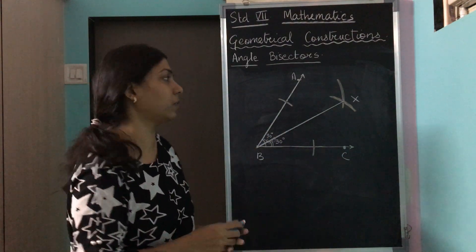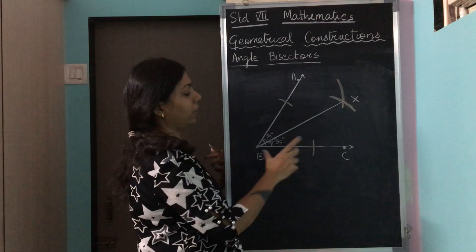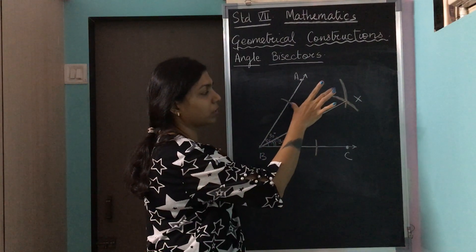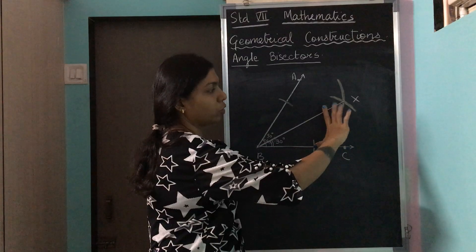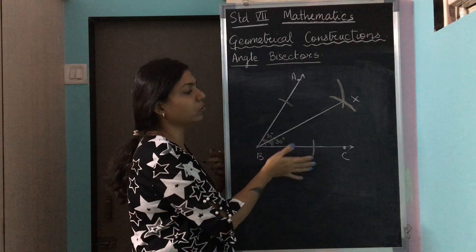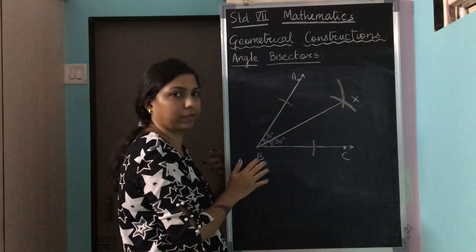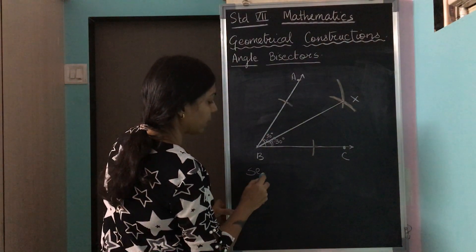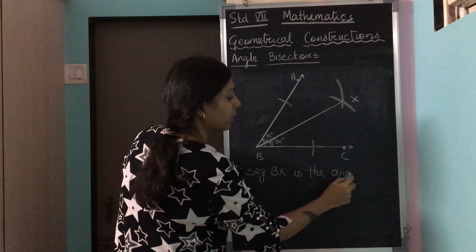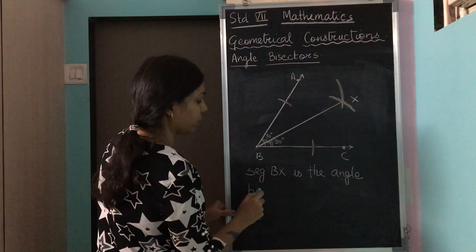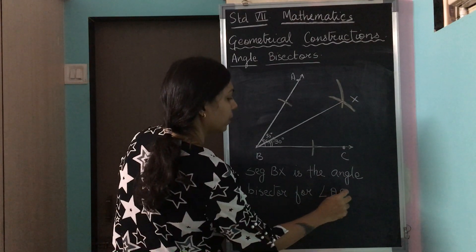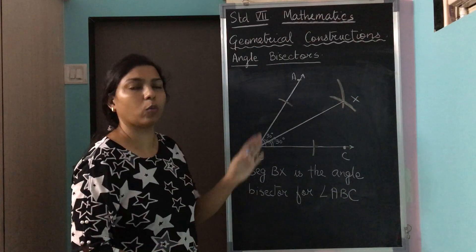This is how you draw your angle bisector. You first draw your angle, then keep your compass on point B and make your arc. Keeping your compass on the arc, you make two more arcs. You get your X mark, and from the X mark you join point B. This gives you your angle bisector. Segment BX is the angle bisector for angle ABC.